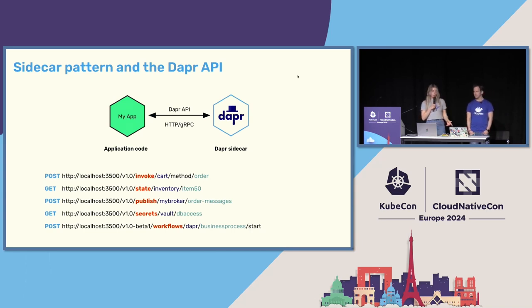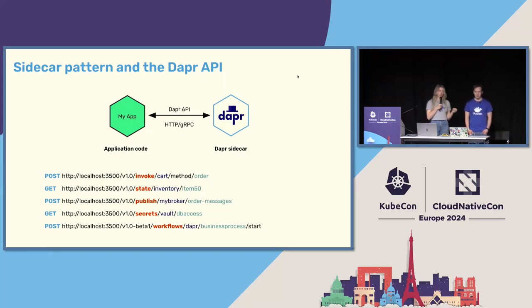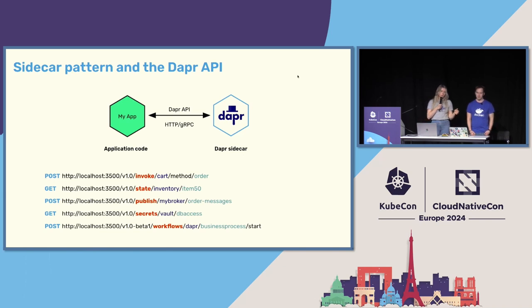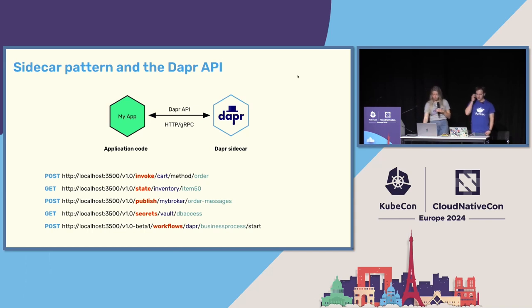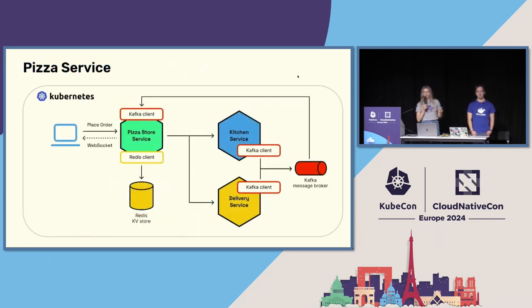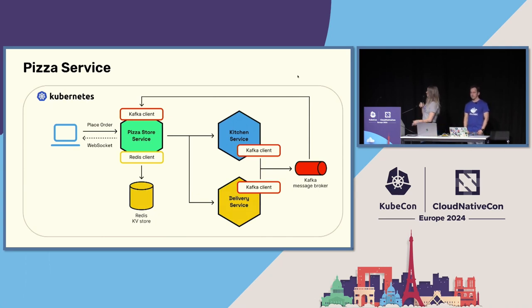This is really important for moving from development to production because your actual URLs do not change. You're running the Dapr client locally, reaching out over localhost, and then you're moving to production, running that as a sidecar, still calling over localhost. To illustrate our end-to-end inner and outer developer loops, we're going to use a service called the Pizza Service.